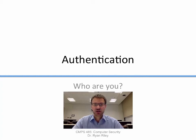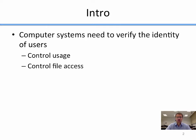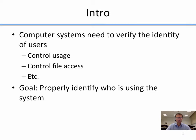Welcome to today's lecture on authentication, where we try to answer the question: who are you? Computer systems need to identify and verify the identity of users. There are a number of reasons for this — you might want to control usage, like who's allowed to use a particular system, or control access to files or other information. The overall goal is to properly identify who is using the system at that moment.